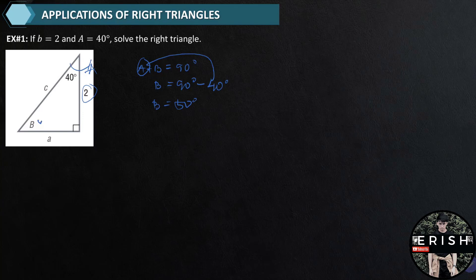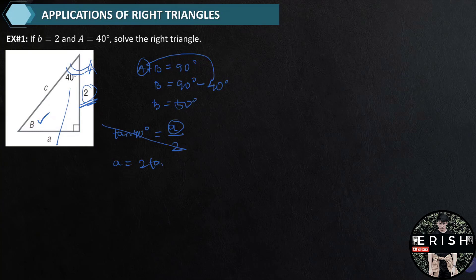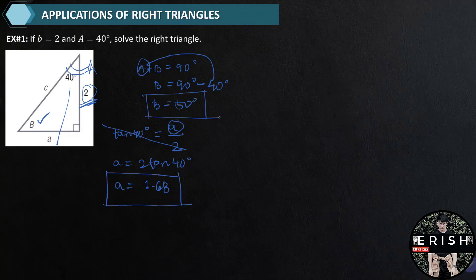We already know angle B — that's one value found. To find side A and side C, we use the tangent function. Tangent 40 degrees is equal to opposite over adjacent, which is A over 2. Solving for A by cross-multiplying, A is equal to 2 times tangent 40 degrees. By calculating, A is equal to 1.68. Remember, when using a calculator here, make sure it is set to degree mode.